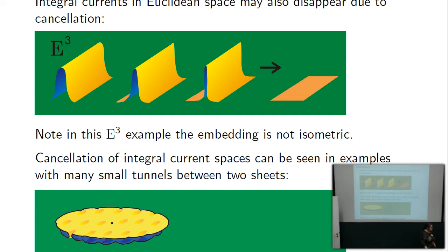Interestingly, this example can be done in three dimensions with non-negative scalar curvature using what are called Gromov-Lawson tunnels (wormholes, or Shen-Yao tunnels depending on the audience). In order to make the sheets get closer and closer together, you increase the number of tunnels, making them denser and denser.